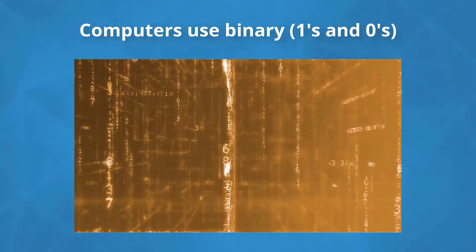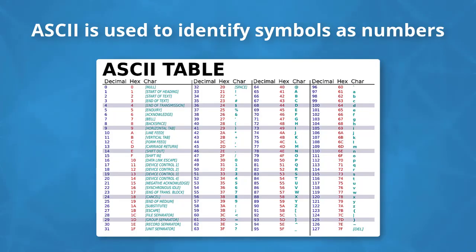Ones and zeros, also known as binary, is the way computers process data and represent numbers. The ASCII format is used globally to assign numbers to symbols.